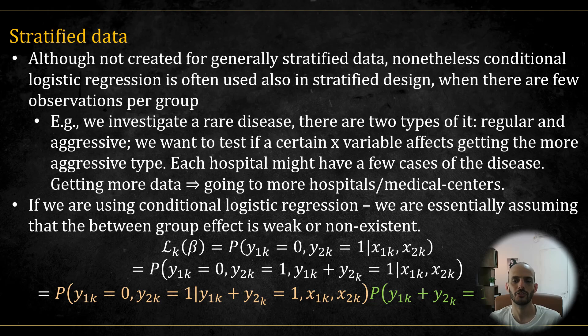Nonetheless, and although conditional logistic regression was not developed for general stratified data, it is often used in stratified designs when there are few observations per group. And let me give you an example of this. Suppose we are investigating some rare disease and there are two types of it, a regular and an aggressive type. We want to test if a certain x variable affects the probability of getting a more aggressive type. Now each hospital we contact might only have a few cases of the disease. So getting more data means approaching more hospitals or medical centers and by this again increasing the number of groups and the number of parameters that we need to estimate.